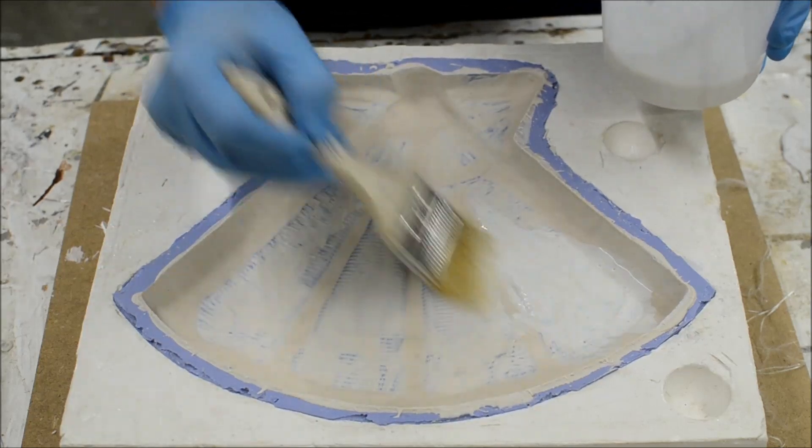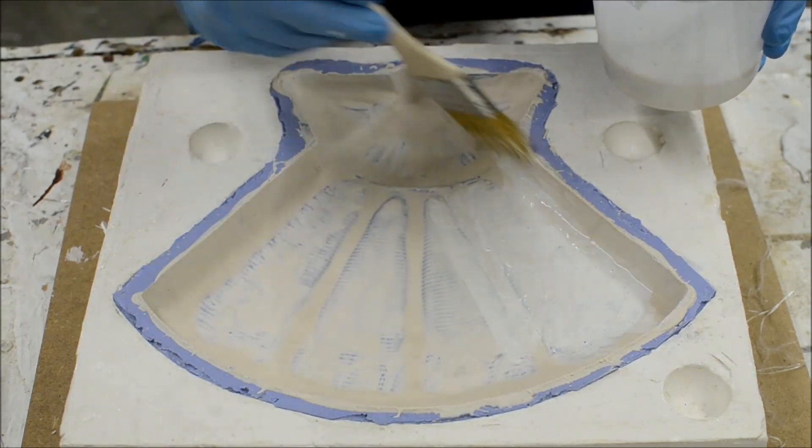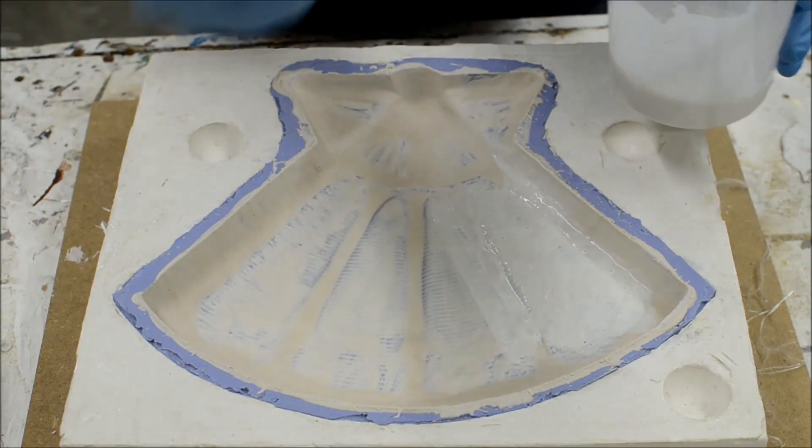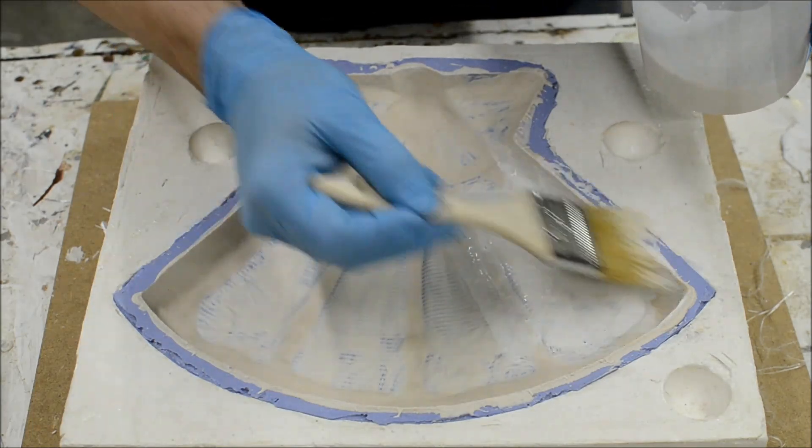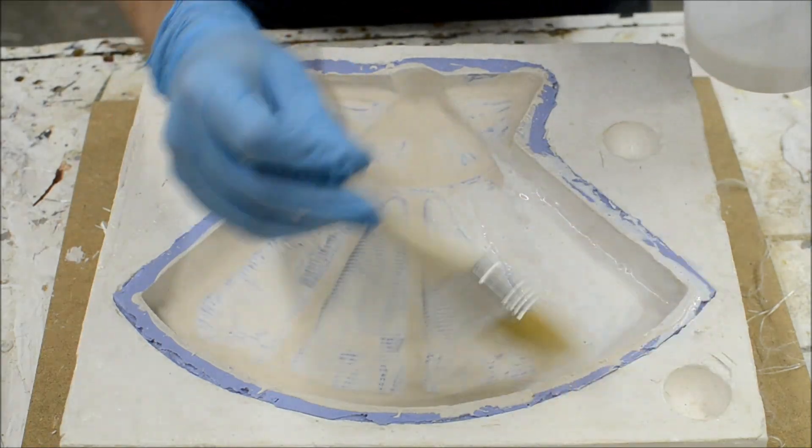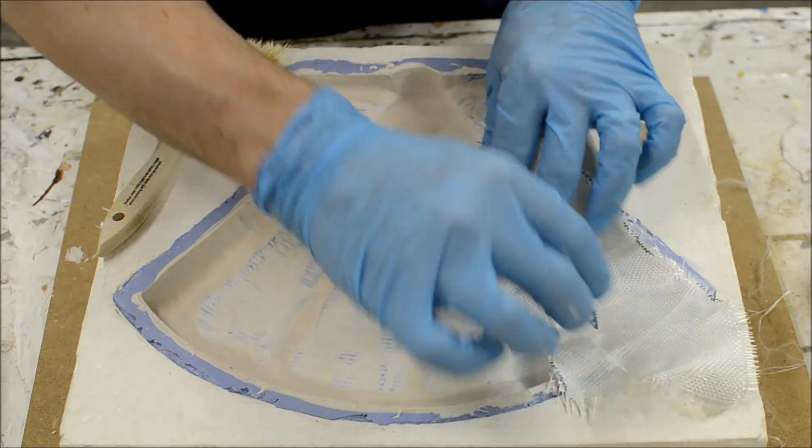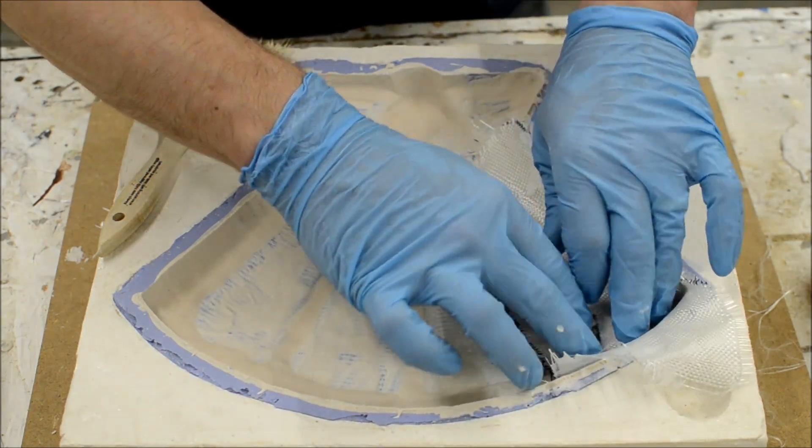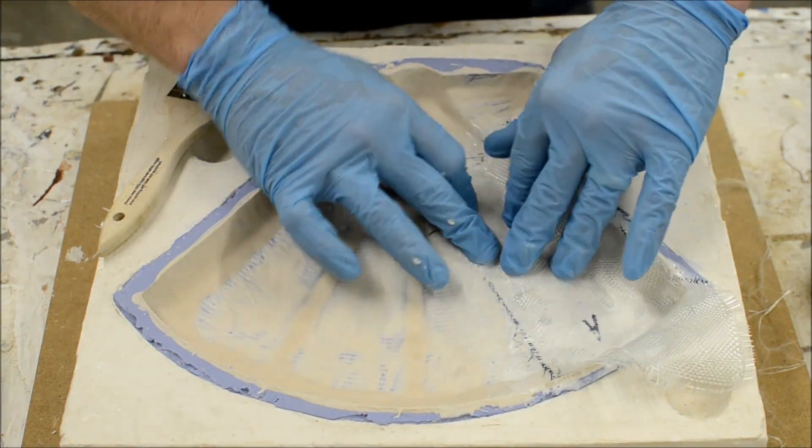As soon as the surface coat is dry, in about 10 to 20 minutes, you can apply the fiberglass. Paint another coating of resin over the mold right before laying in your cloth. Lay your pieces over the entire surface of your mold, with the edges slightly overlapping each other.